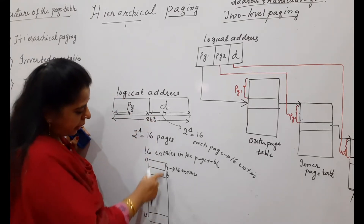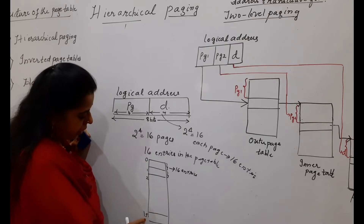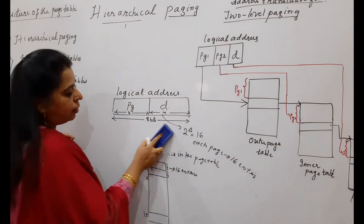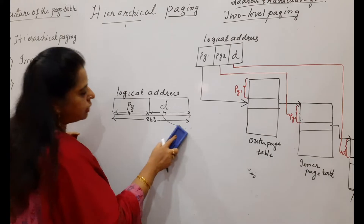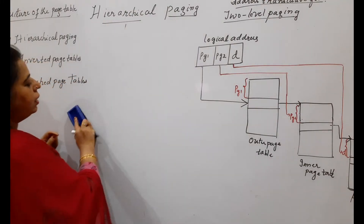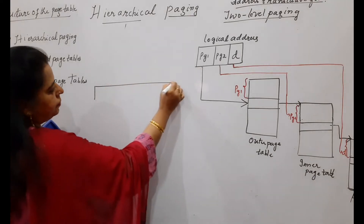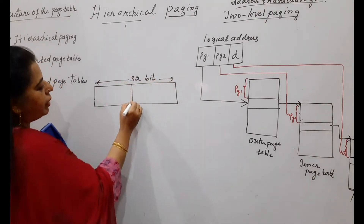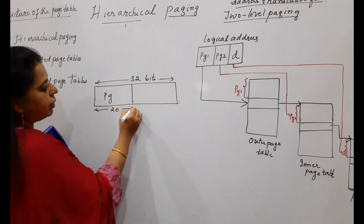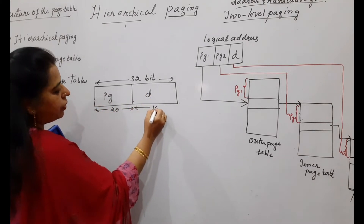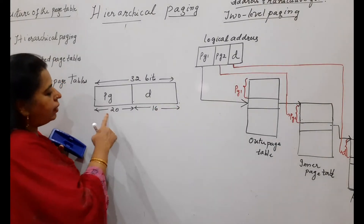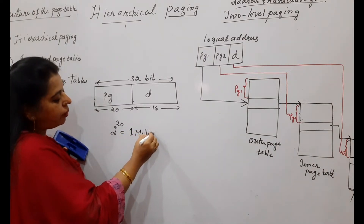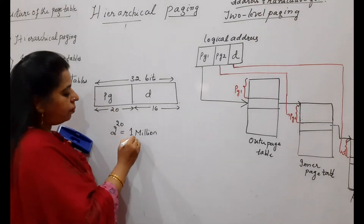Now let us take a slightly higher logical address space. Suppose your logical address space is represented by 32 bits. In that case, if 20 bits are used to represent the page number and 12 bits are used to represent the displacement or offset, then 2 to the power of 20 equals 1 mega — that means 1 million pages will be there for that particular process.